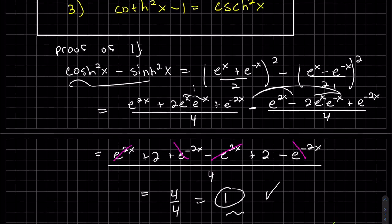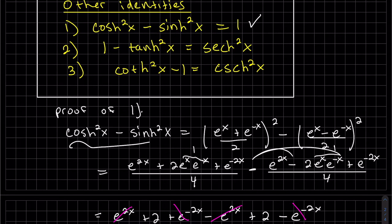And proof of three, I'll let you guys try that on your own. We're just going to take this one and divide through by sinh squared x on both sides to create that.